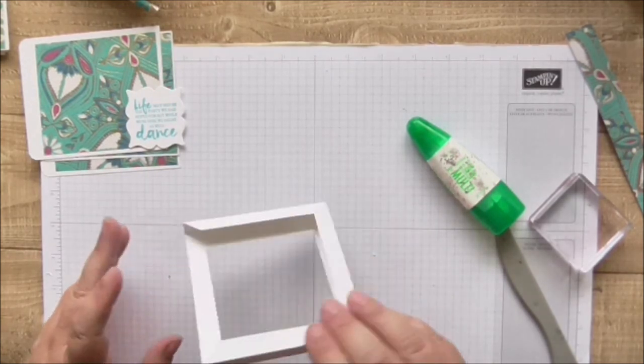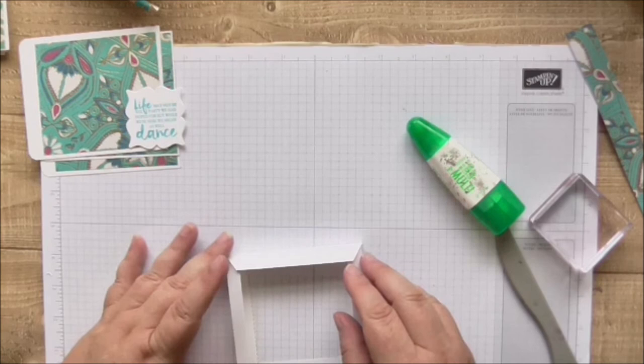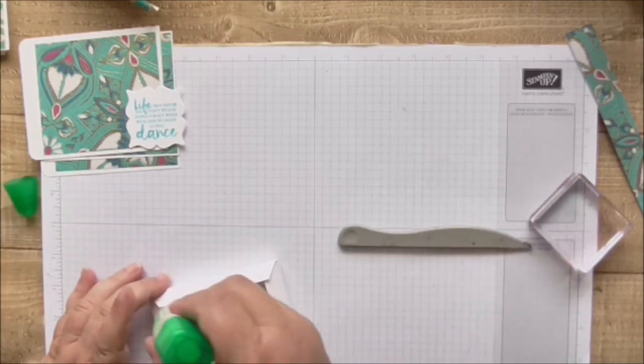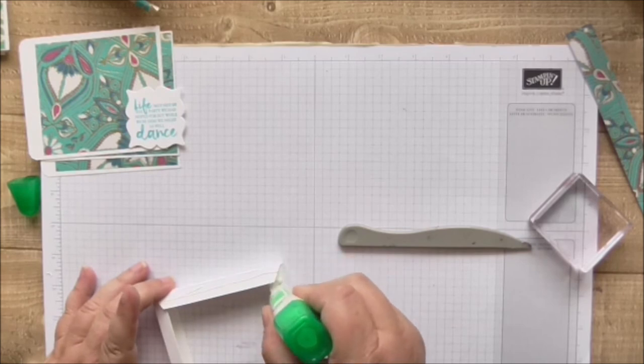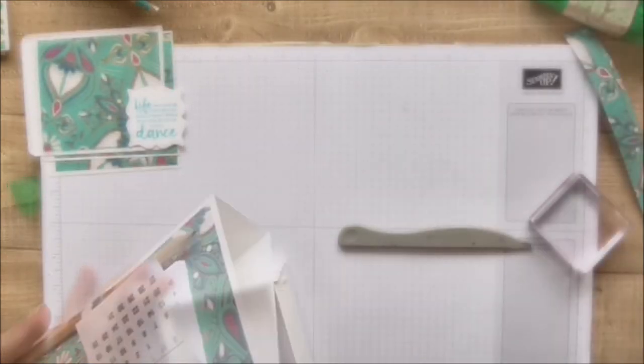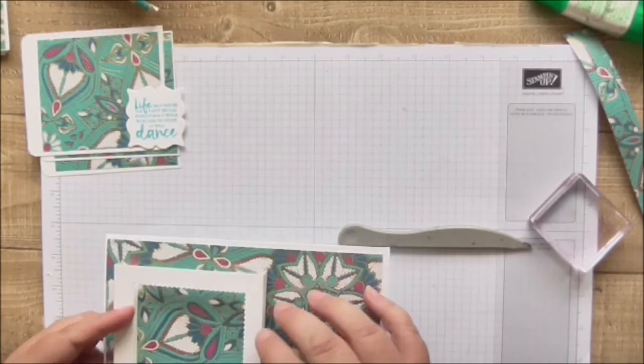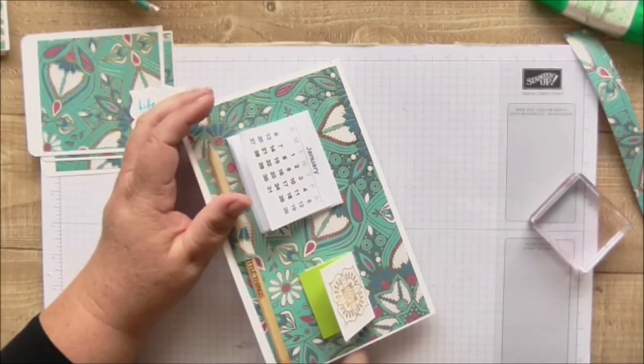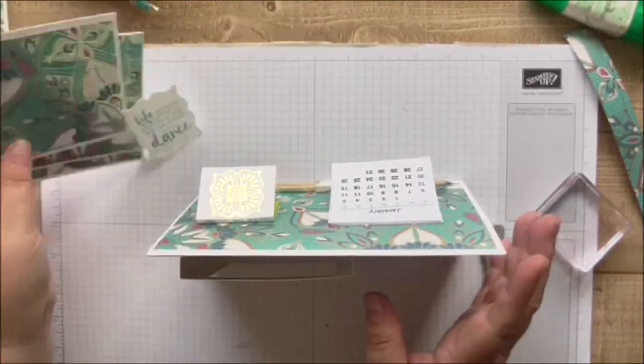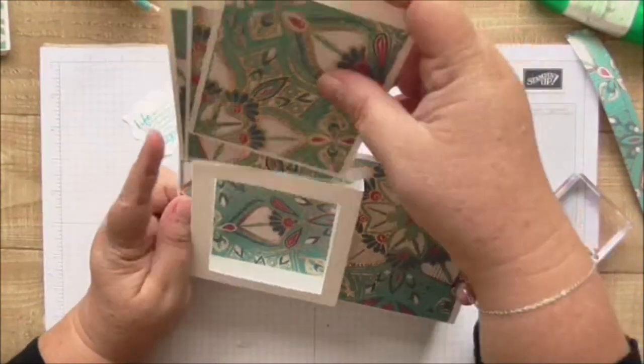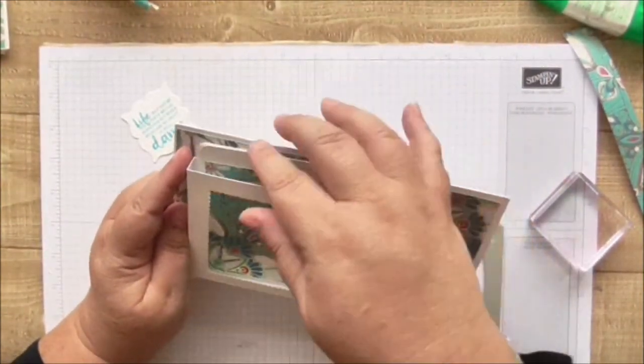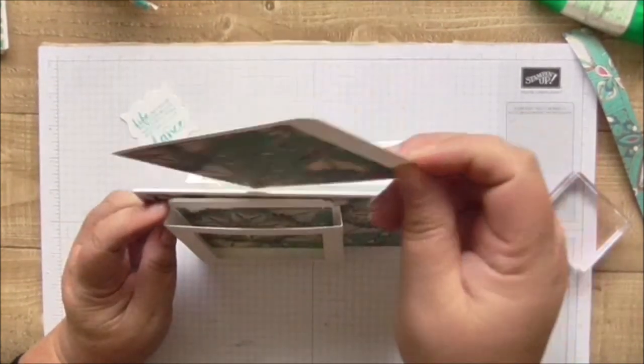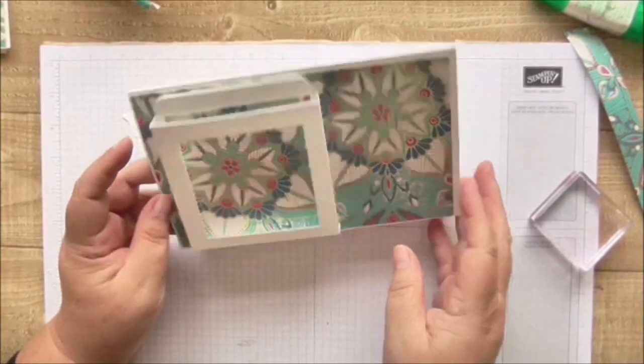Just let that take, and then pop some glue on these flaps at the back. Put plenty of glue on. And there's your lovely frame, and then these will slot nicely into there. And then you can pop your photographs onto them, and you can easily change them, swap them around.